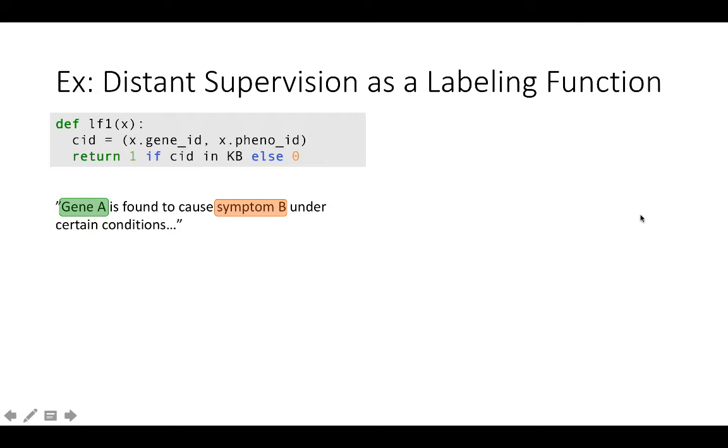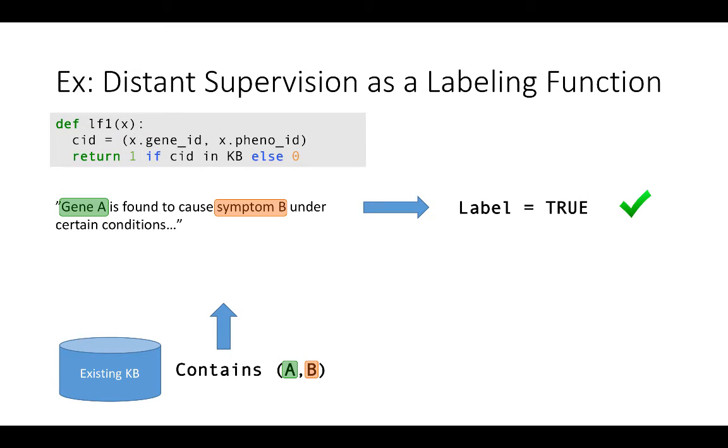So what do labeling functions look like? Let's consider an example where we'll express a traditional distance supervision approach as a labeling function. Here we'll say that if a gene and a symptom that are known to be connected occur in a sentence, we'll label it as true. Here we see this is actually correct. However, we see other examples where this would be incorrect. In data programming, we learn the accuracies of each labeling function to take this noise into account.